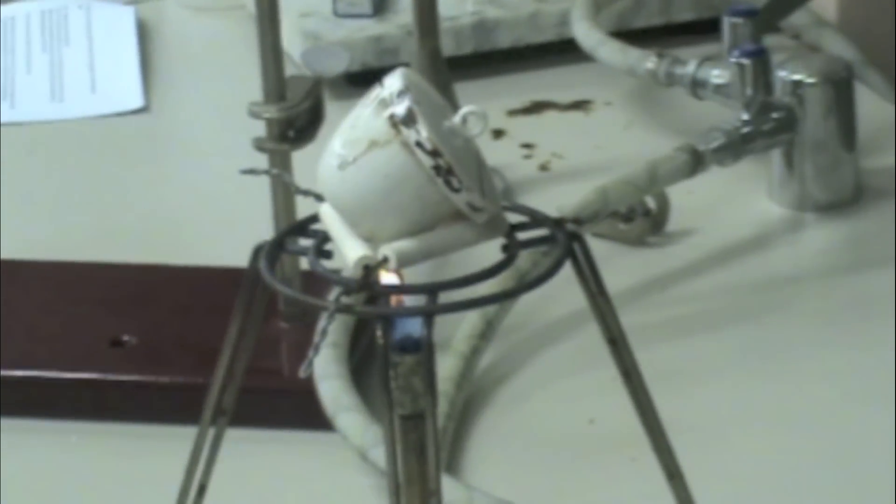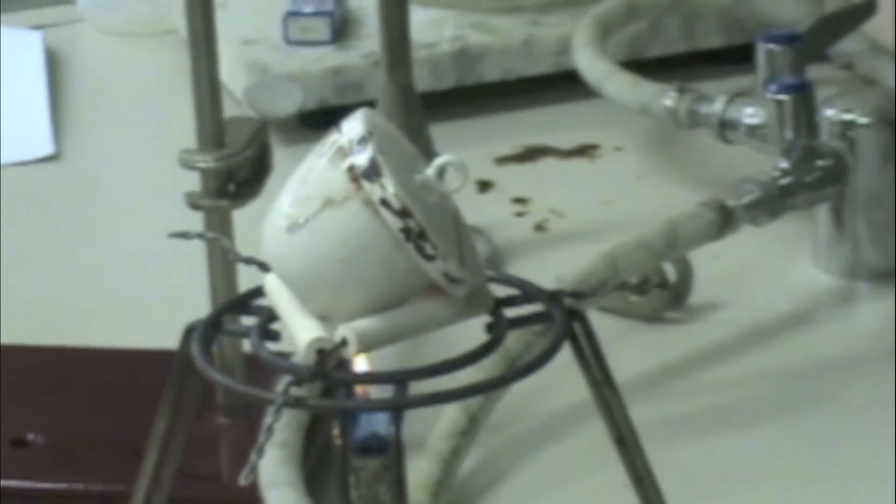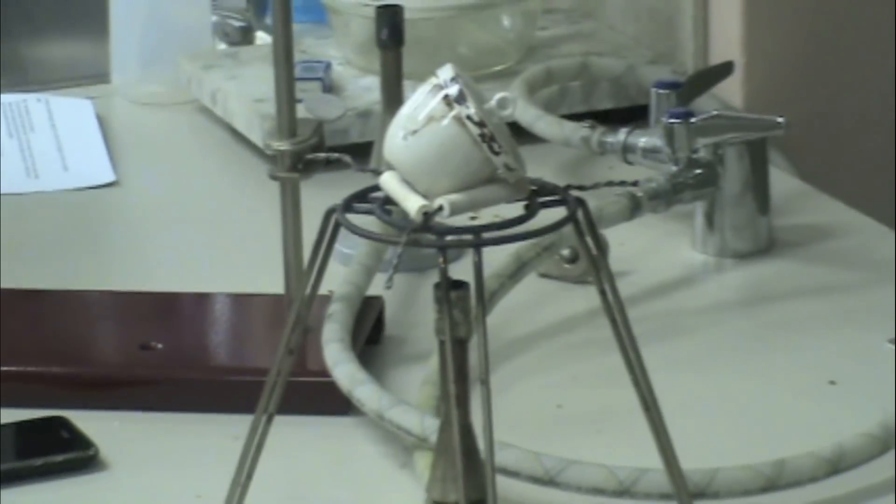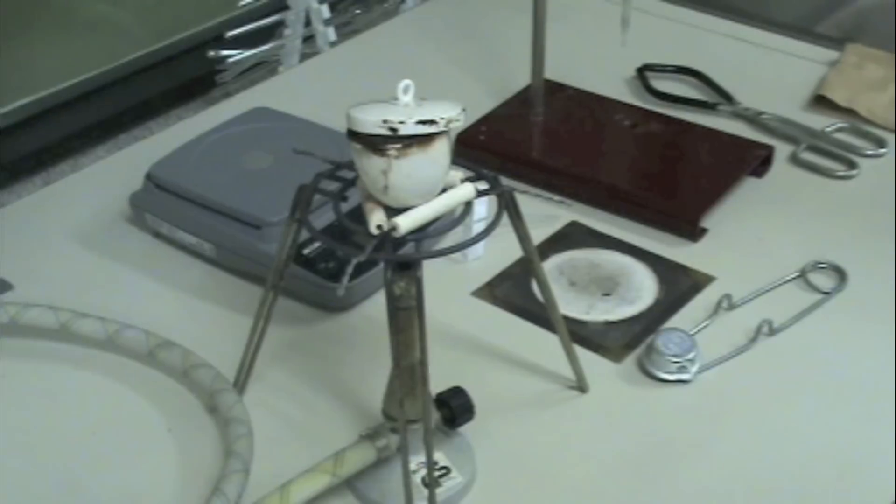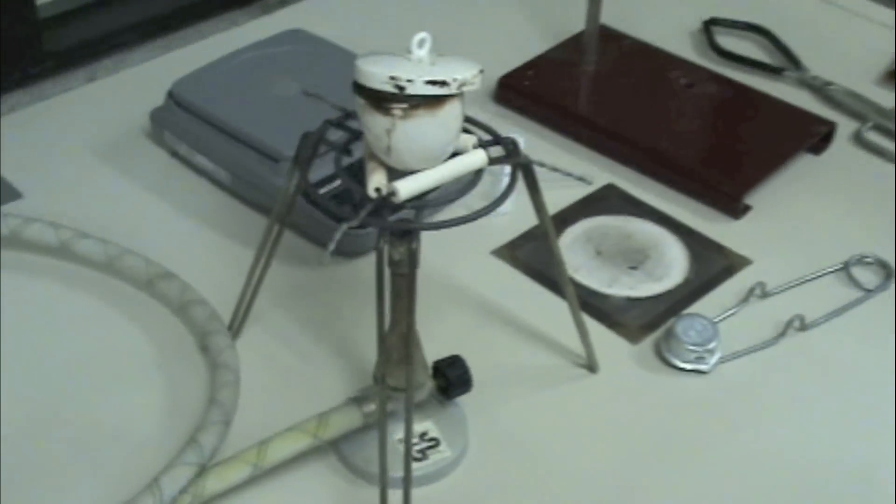So first, place the crucible and lid on a clay triangle and heat until red hot for about 5 minutes. Once the heating is complete, place the crucible on a clean wire gauze and let it cool to room temperature.